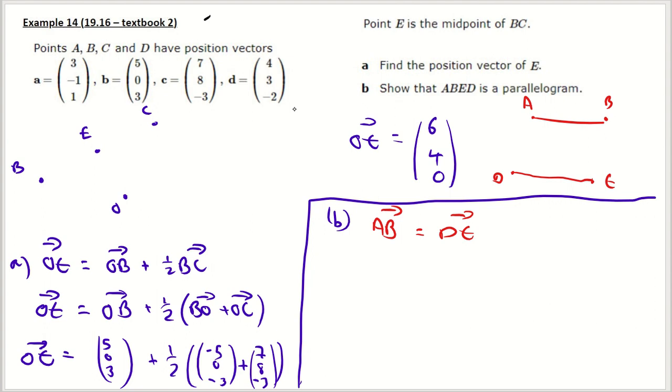Right, first of all, then, A, B, so that is going to equal to A, O, plus O, B, which is going to be 3, negative 1, 1. Try and save a little bit of space now. Plus 5, oh, wait, that's O, A, isn't it? Let's change the sign for A, O.